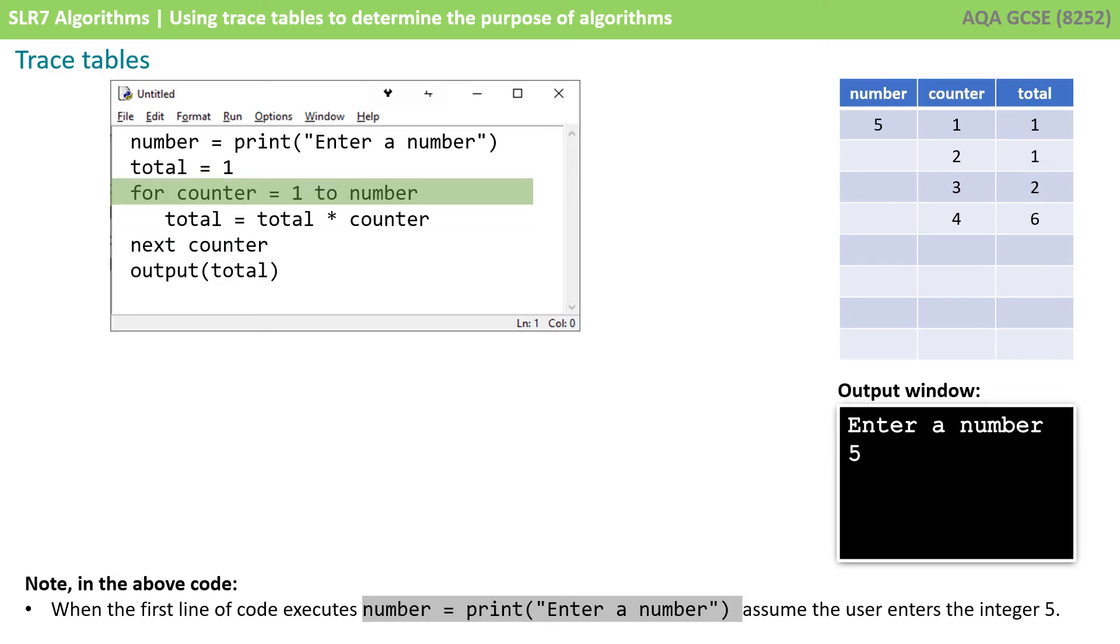Back to the top again. We're going for counter equals one to number. Well, number's five and counter's four, so we're still going into this for loop. Total becomes equal to the current value of total, that's six, times counter, which is four. Six times four is 24, and this gets placed into total. So we've updated it. Next counter, so we increment counter to five.